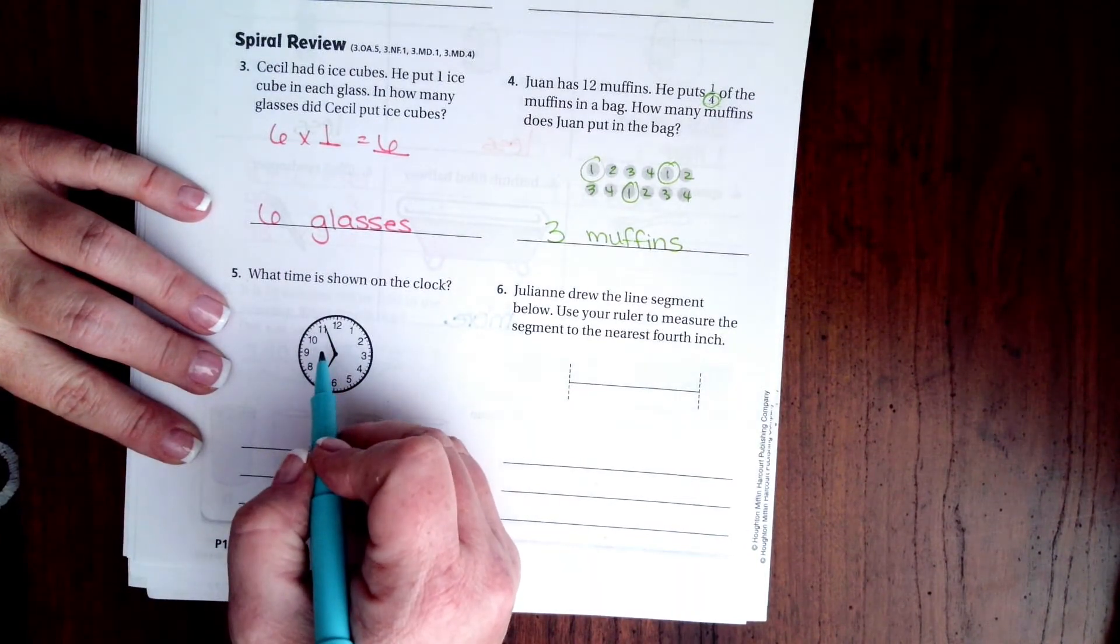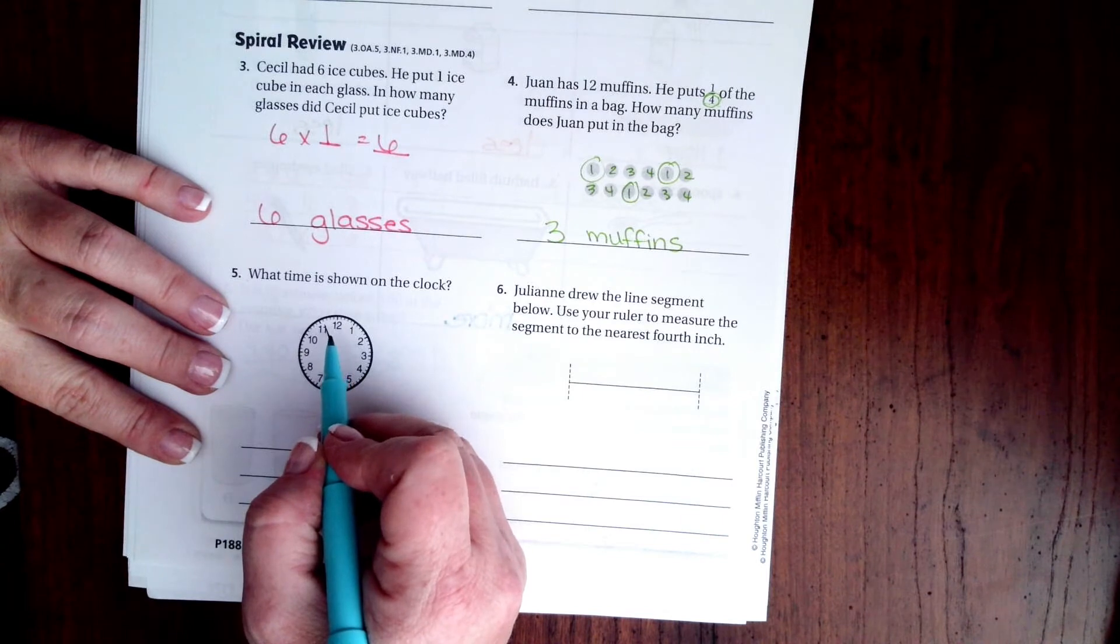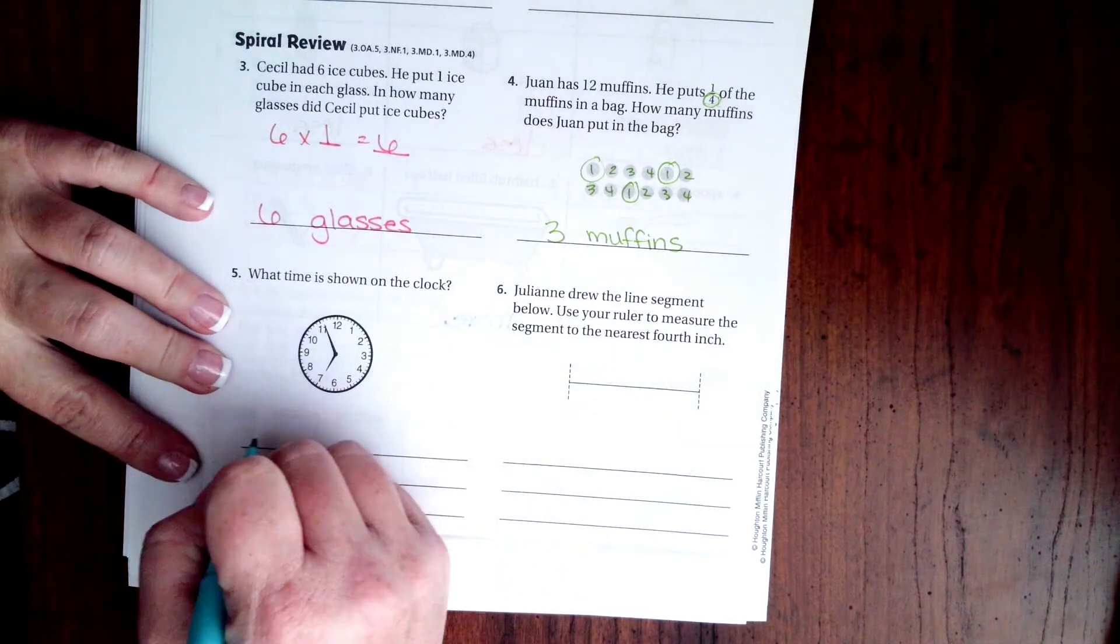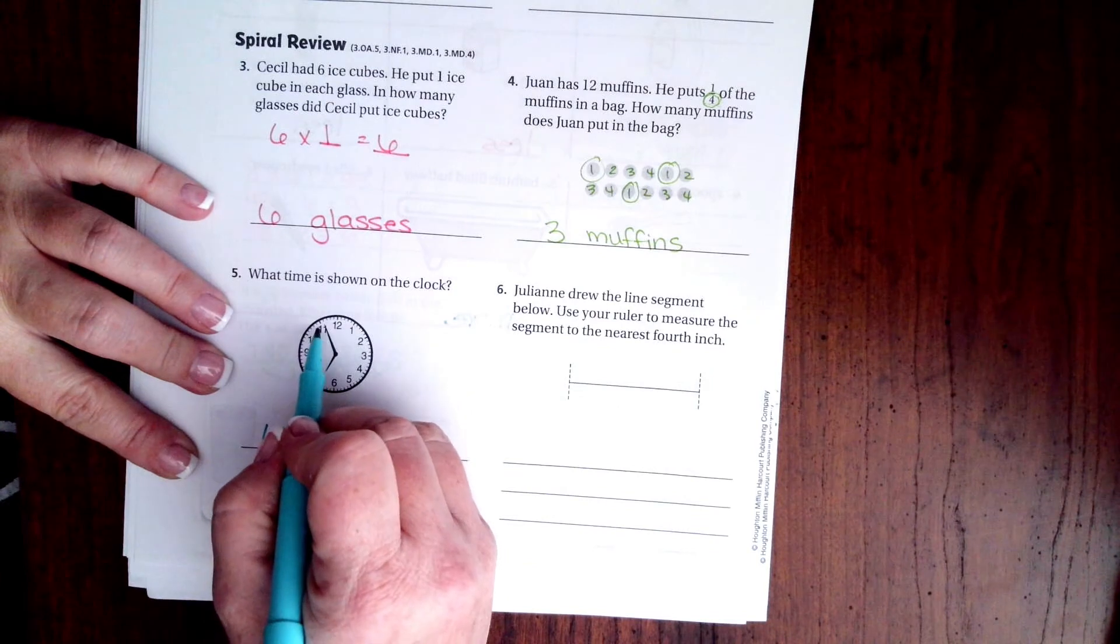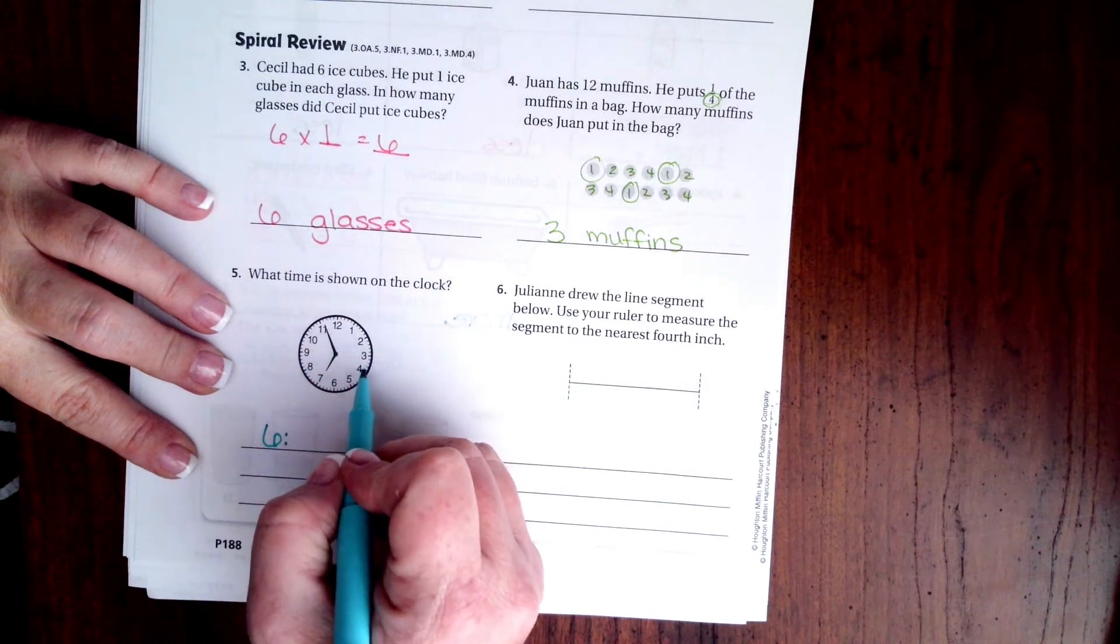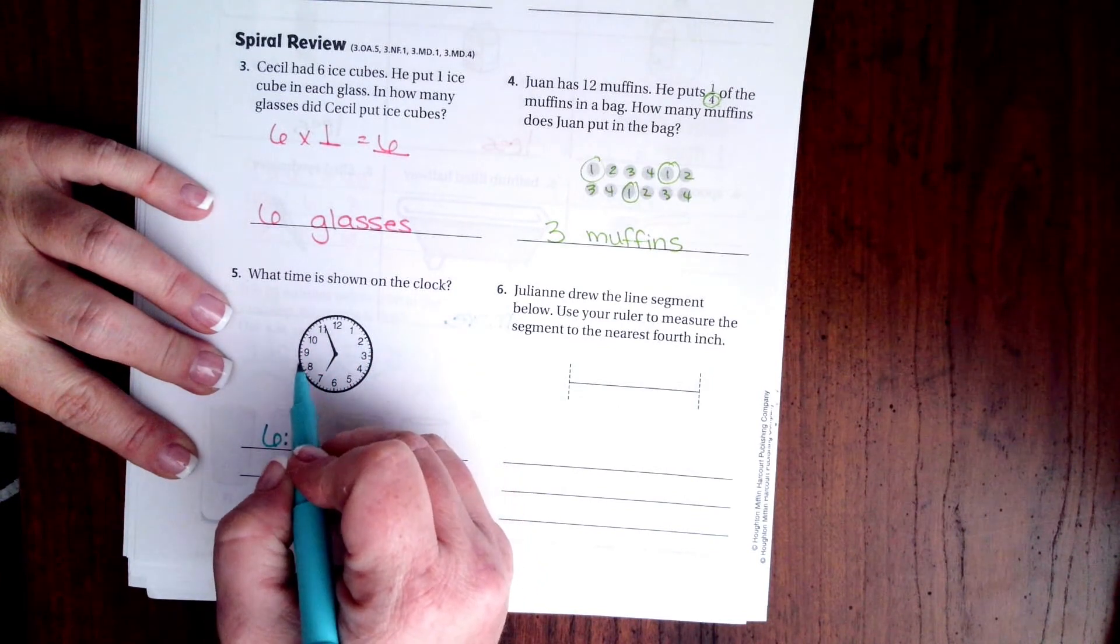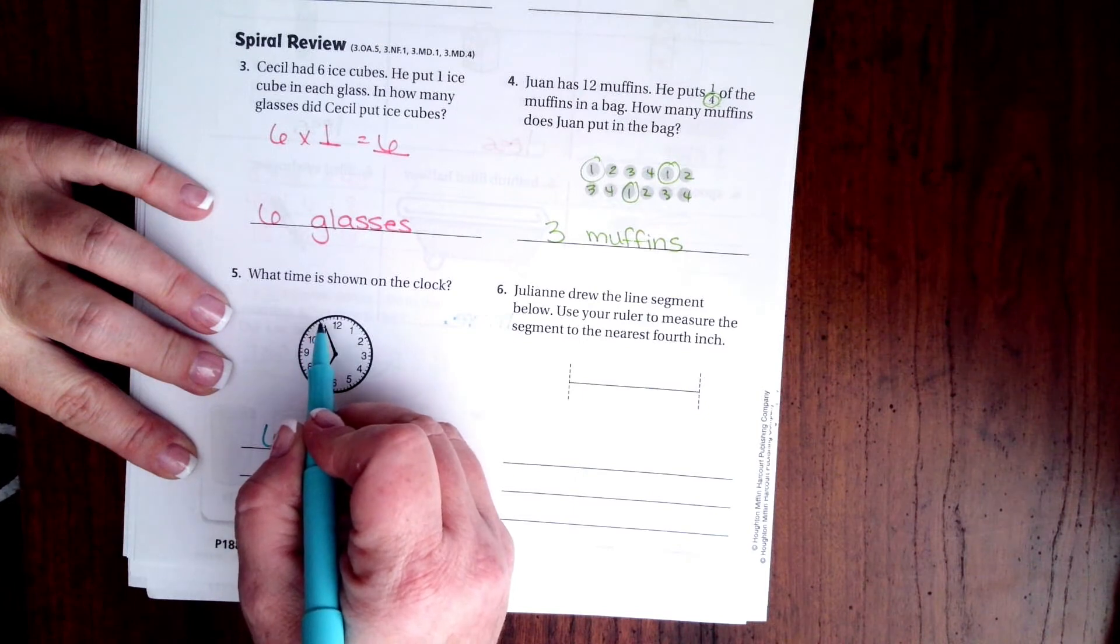And I know that because this hand, the minute hand, hasn't touched the 12 yet. So it's still going to be six. Six, and then five, ten, fifteen, twenty, twenty-five, thirty, thirty-five, forty, forty-five, fifty, fifty-five, and it's just past that, so I'm going to put 56.